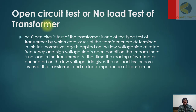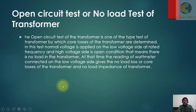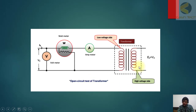The open circuit test of a transformer is one of the type tests by which the core losses of the transformer are determined. In this test, normal voltage is applied on the low voltage side at rated frequency, and the high voltage side is left open — meaning there is no load on the transformer. The wattmeter connected on the low voltage side gives the no-load losses or core losses. The open circuit test provides two parameters: core losses and the no-load impedance of the transformer.